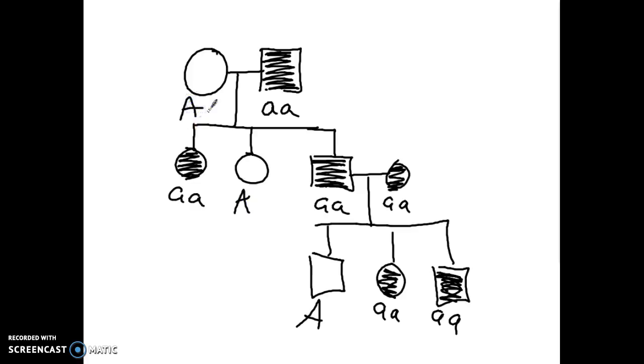We look at this pedigree and say, is it even possible for that to happen? And what's not possible is this relationship right here. Two parents that are both homozygous recessive cannot have a child that has a dominant phenotype. So therefore, that rules this out and that's what you have to do.